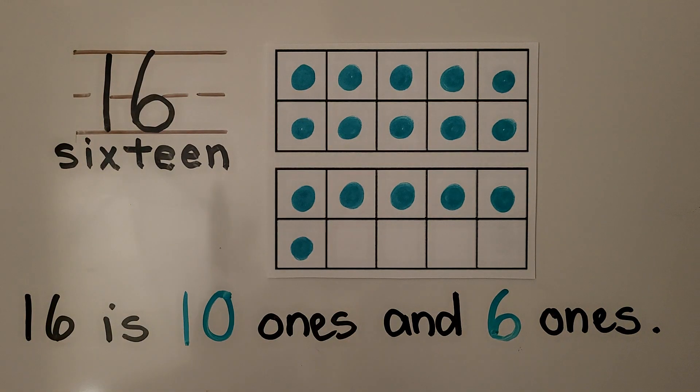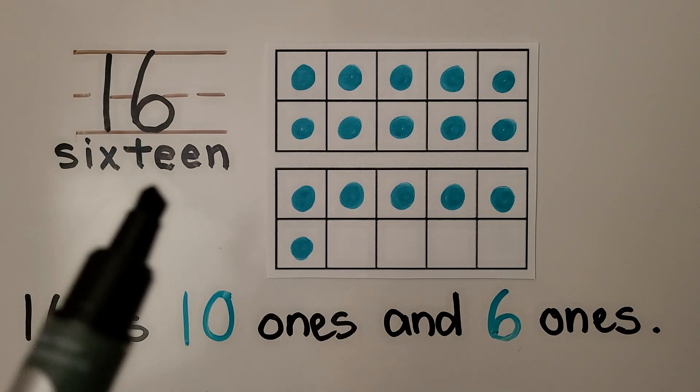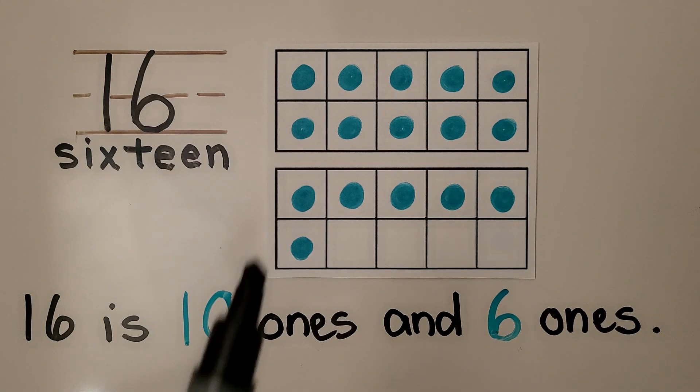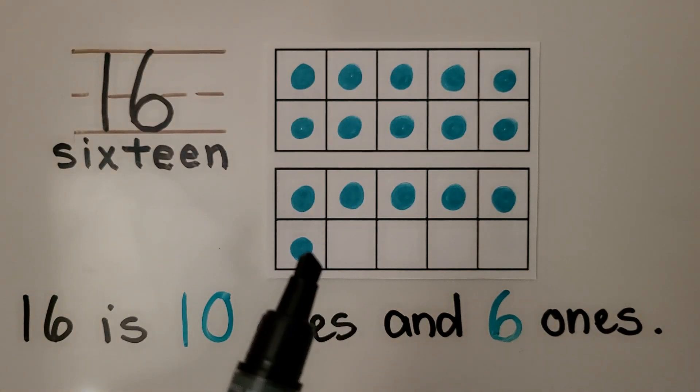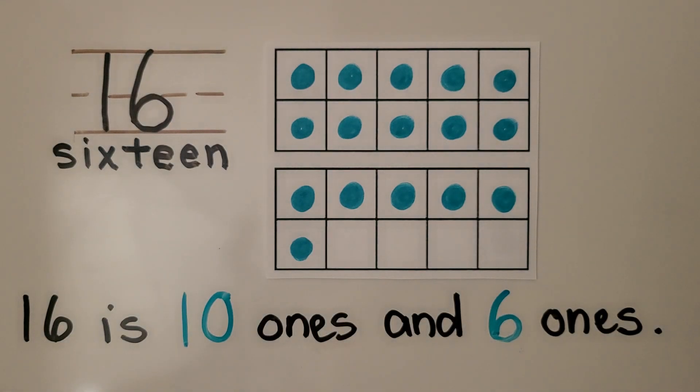This is the number 16. It's a 1 with a 6 next to it. This is the word 16. We can model 16 as a full 10 frame and 6 more. 16 is 10 ones and 6 ones.